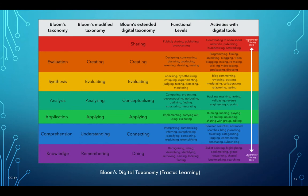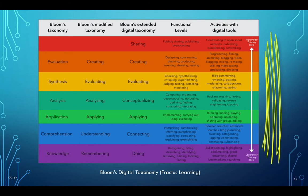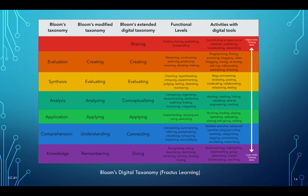Looking at Bloom's Taxonomy further, we see higher-order thinking skills on one side and lower-order thinking skills on the other. Unfortunately, some pedagogy still being practiced today targets only lower-order thinking skills, which is bad — because we have the know-how, pedagogy, tools, rubrics, and frameworks to engage learners in higher-order thinking. Since media literacy puts emphasis on the learner as participant, creator, and contributor, we cannot stay in lower-order thinking skills.